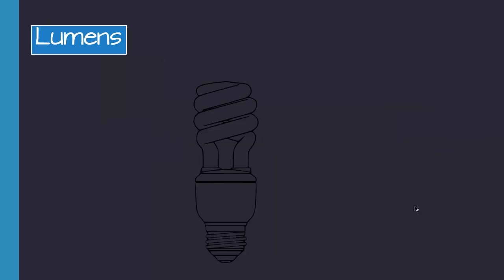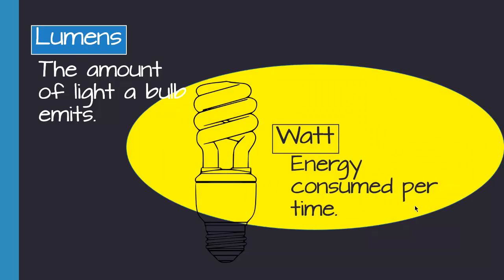Let's review for a second. So lumens is the amount of light a light bulb emits. A watt is the energy consumed per time.